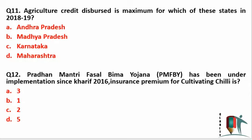Agriculture credit disbursed is maximum for which of the following states — Andhra Pradesh, Madhya Pradesh, Karnataka, or Maharashtra? The maximum disbursement is in Andhra Pradesh. So the answer is Andhra Pradesh, as it has the maximum percentage of agricultural credit.